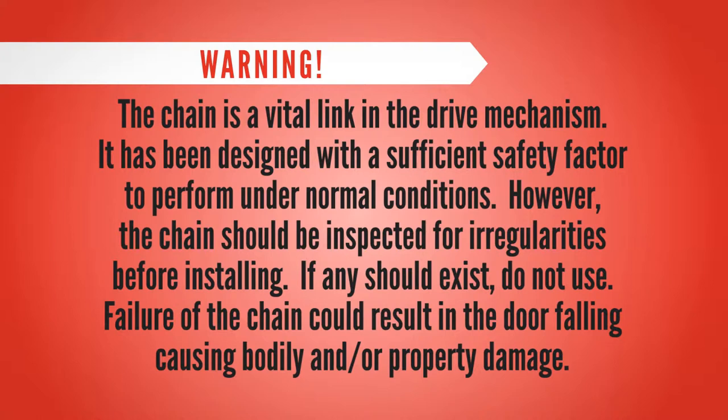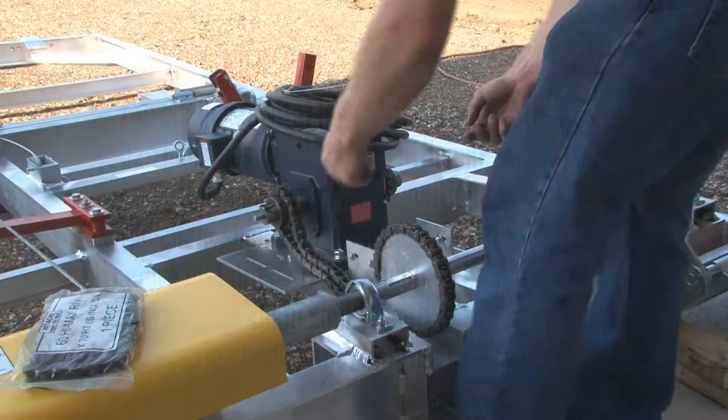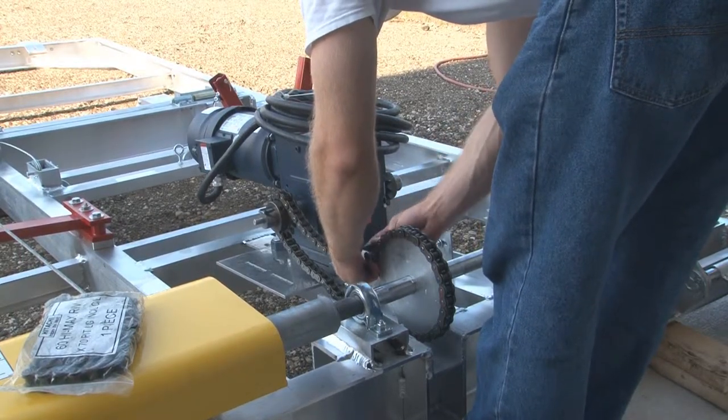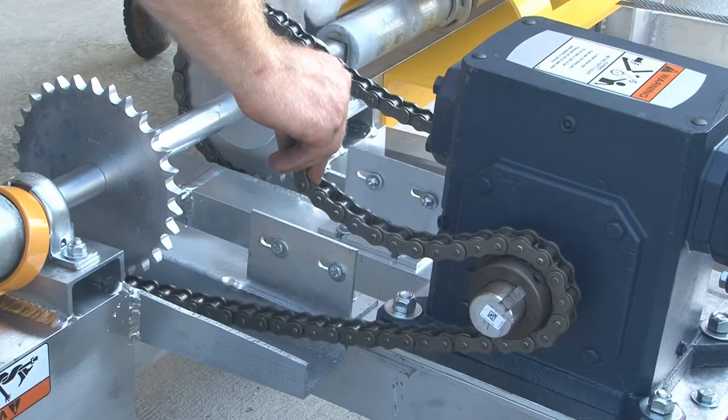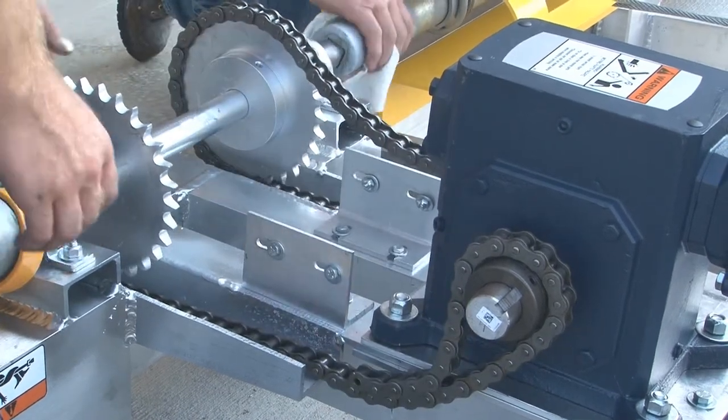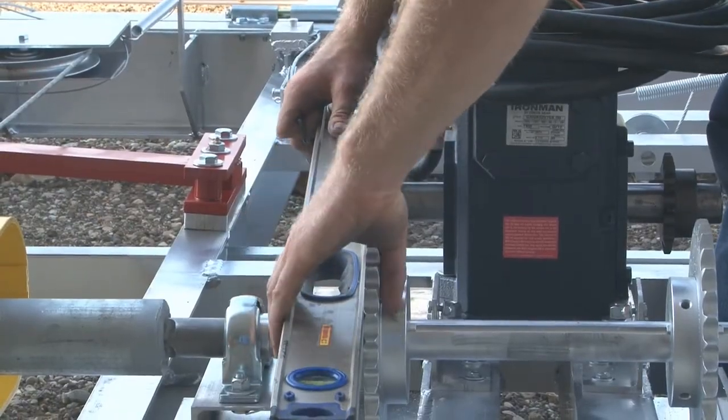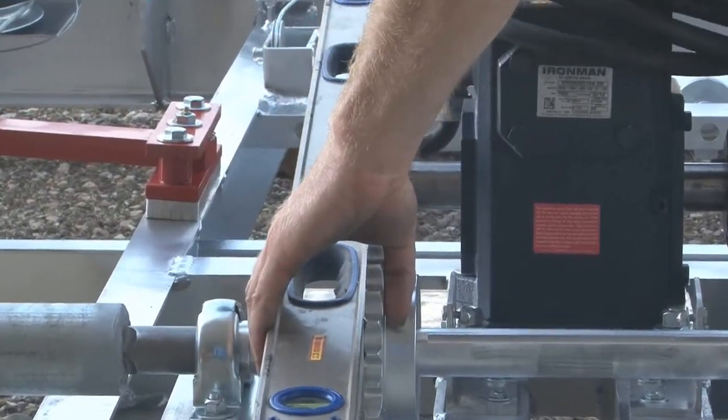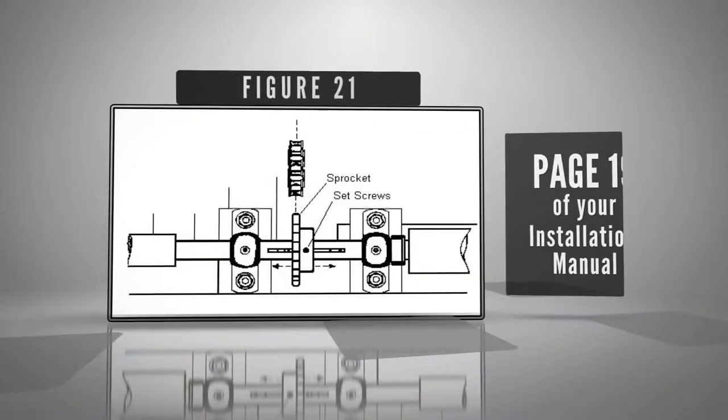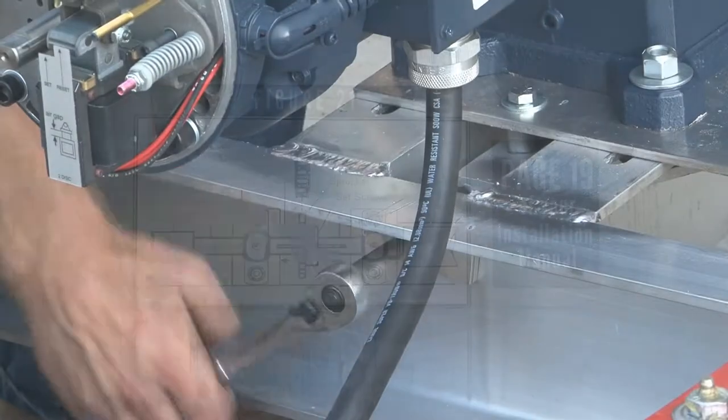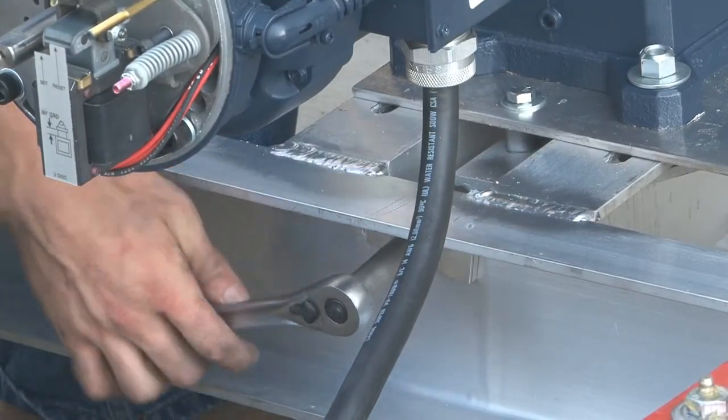Warning: The chain is a vital link in the drive mechanism. It's been designed with a sufficient safety factor to perform under normal conditions. However, the chain should be inspected for irregularities before installing. If any should exist, do not use. Failure of the chain could result in the door falling causing bodily and or property damage. Care should be taken when installing master links. If damage should occur when attempting to install, do not operate door before replacing. Start to tighten chain adjuster until most of the slack is removed. Align chain sprockets if necessary. Move only sprocket on drive shaft.